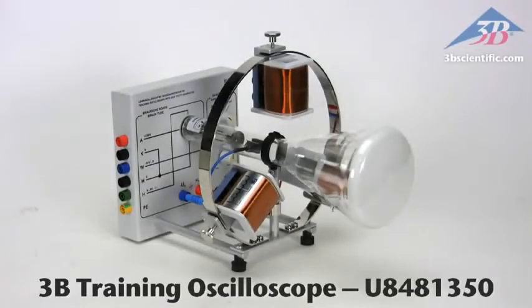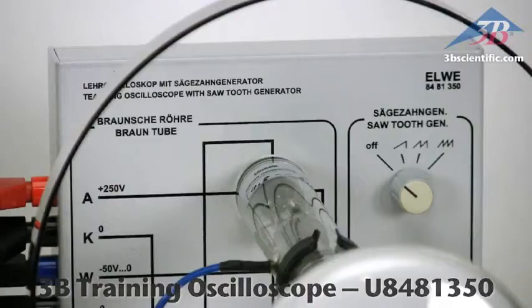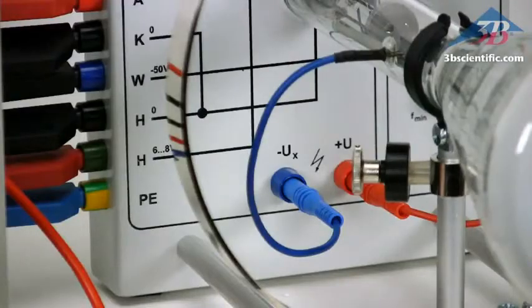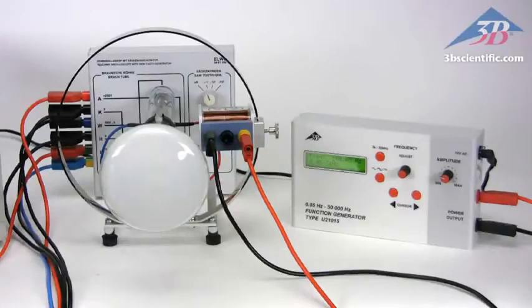The training oscilloscope item number U8481350 from 3B Scientific. The training oscilloscope offers a great tutorial on the physics of electron beams and analog oscilloscopes.